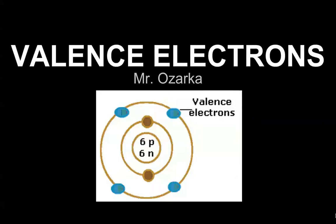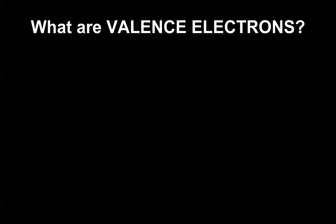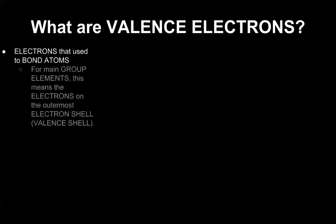This is going to be a quick tutorial about valence electrons. So what are valence electrons? They're electrons that are used to bond atoms. For main group elements, this means the electrons that are on the outermost electron shell, or what's called the valence shell.